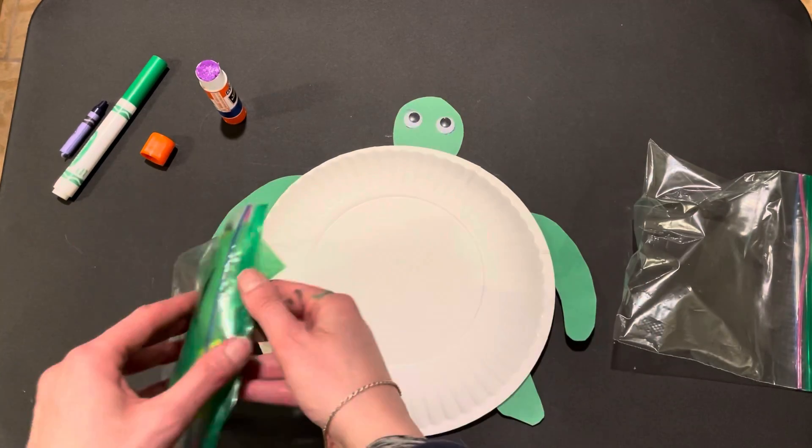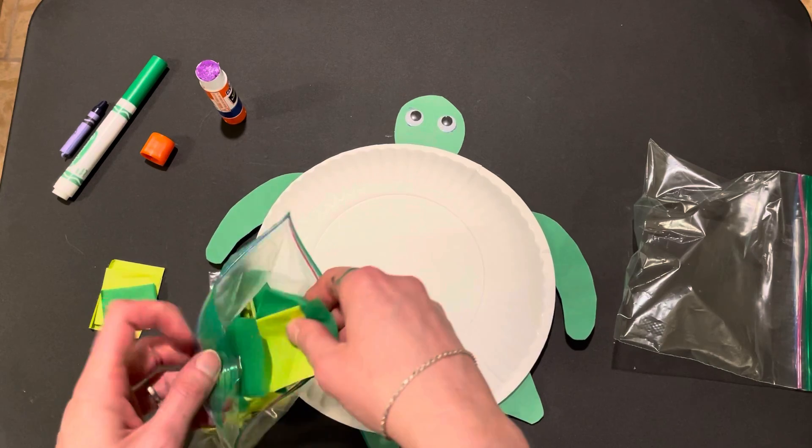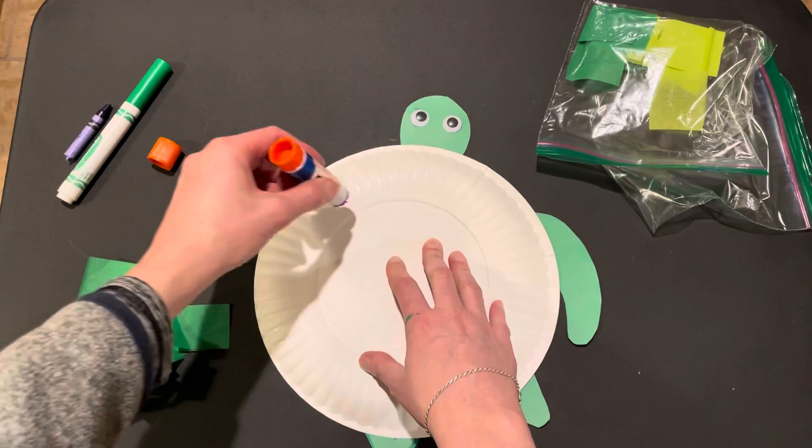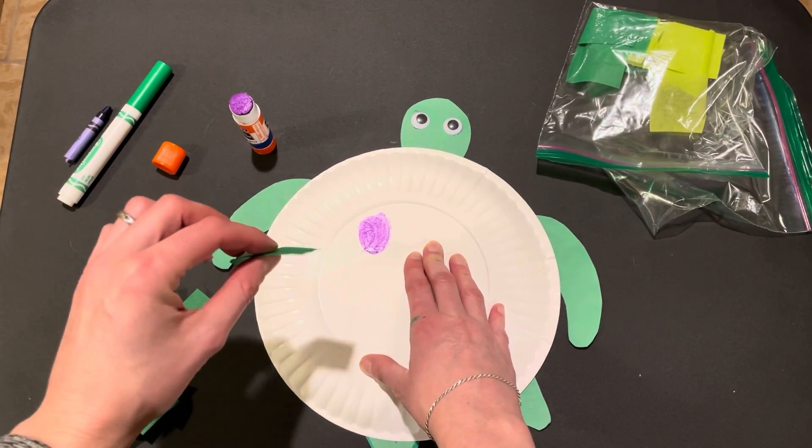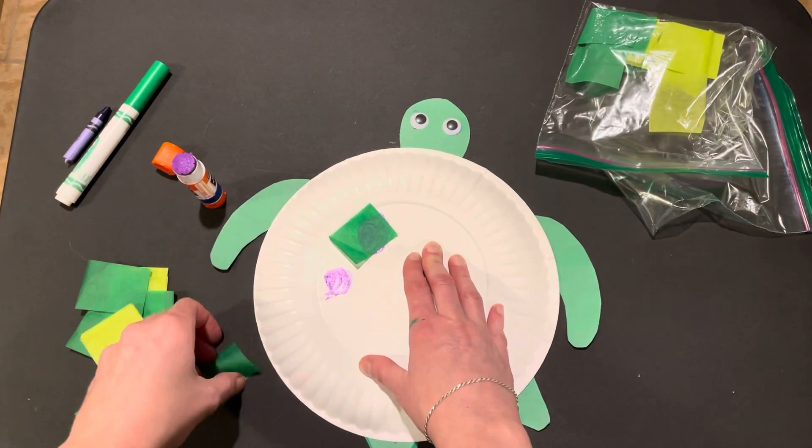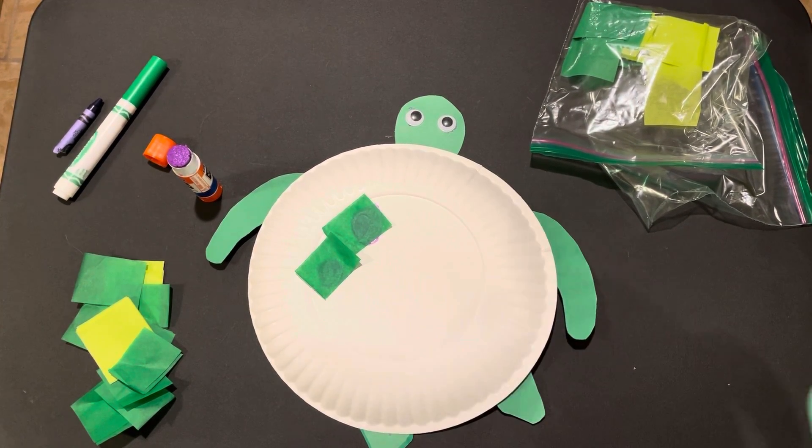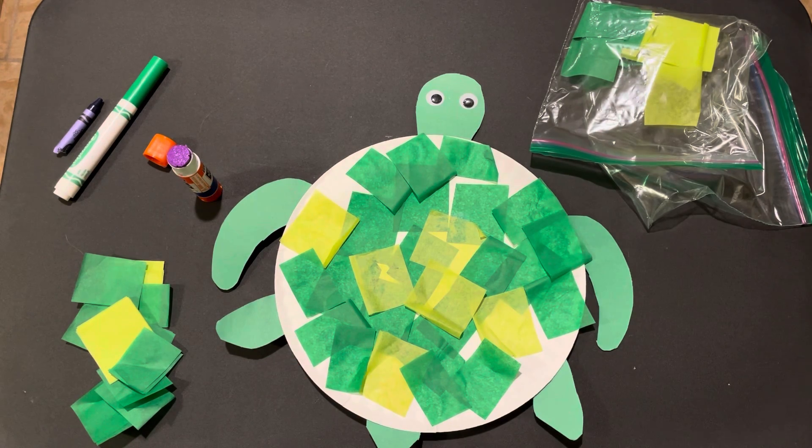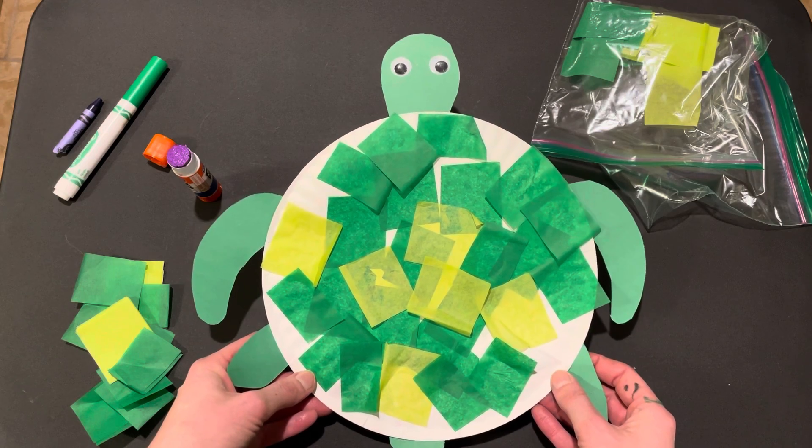And I like to take it out of the bag. You can put it in a bowl or on a plate so it doesn't get away from us while we're working. And we can follow that same sequence of glue. Take. And this is great because we're working on our pinch here. Trying to pick up. Push. Until the whole turtle shell is covered. Or, as much as your child has the tolerance or attention for, but this could be similar to what might be your finished product.